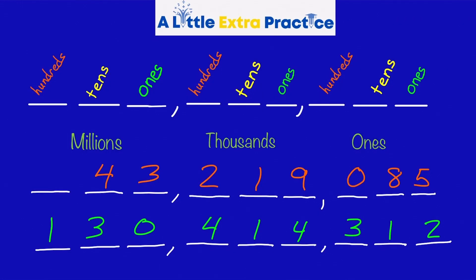First, we're going to get started with the place value out to the millions. Taking a look at the periods: the ones period, the thousands period, and the millions period. What do you notice?